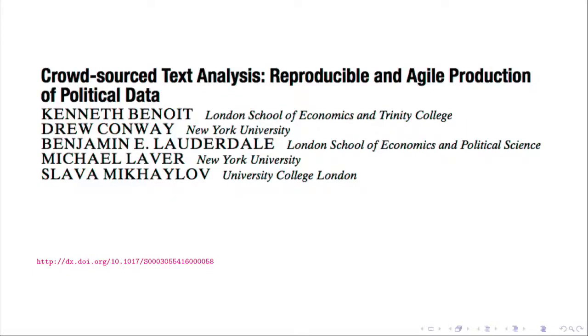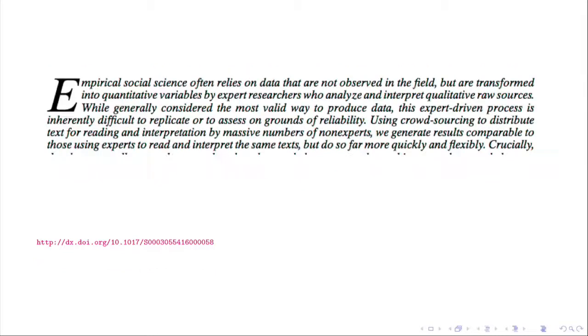Just to give an example of a paper that does this using text data—this is a paper by some political scientists about crowdsourcing text analysis. In the abstract, they say empirical social science often relies on data that are not observed in the field but are transformed into quantitative variables by expert researchers who analyze and interpret qualitative raw sources. While generally considered the most valid way to produce data, the expert-driven process is inherently difficult to replicate or to assess on the grounds of reliability.